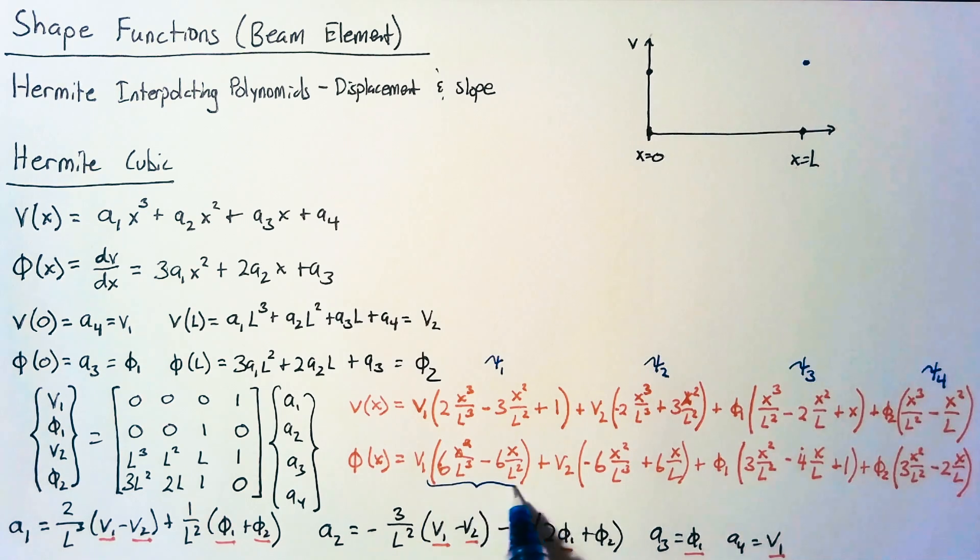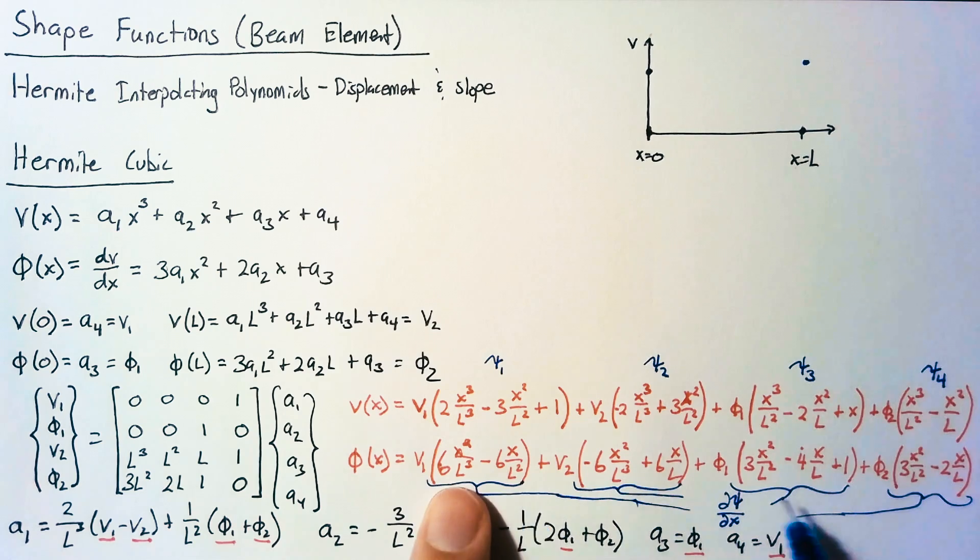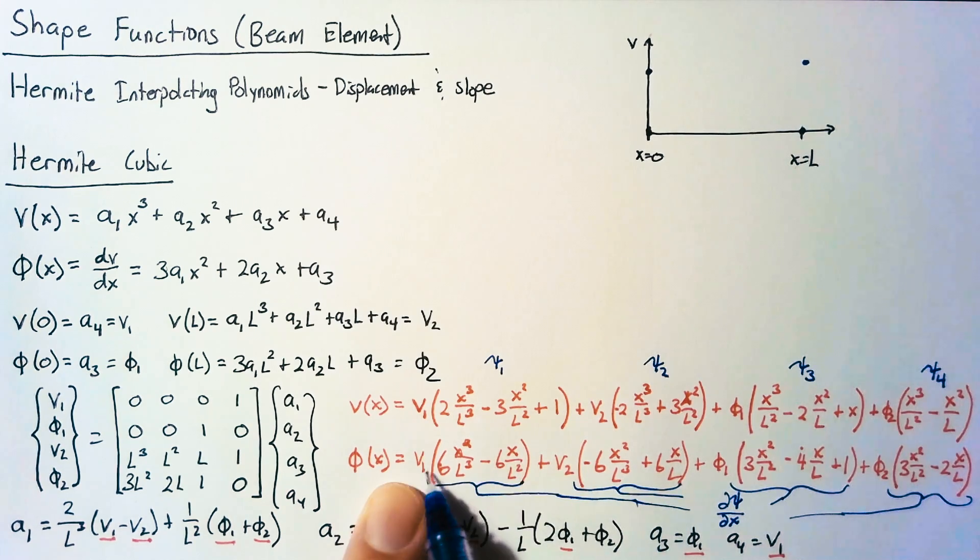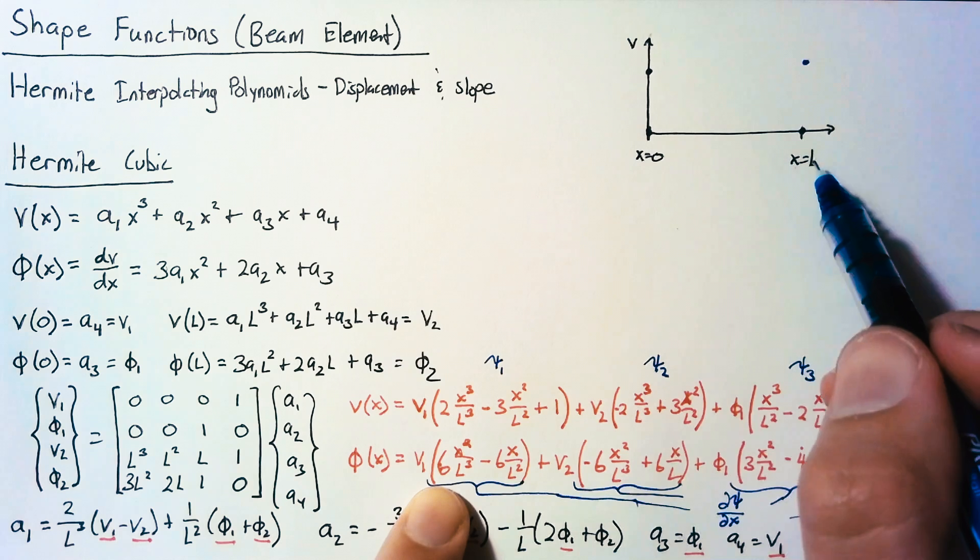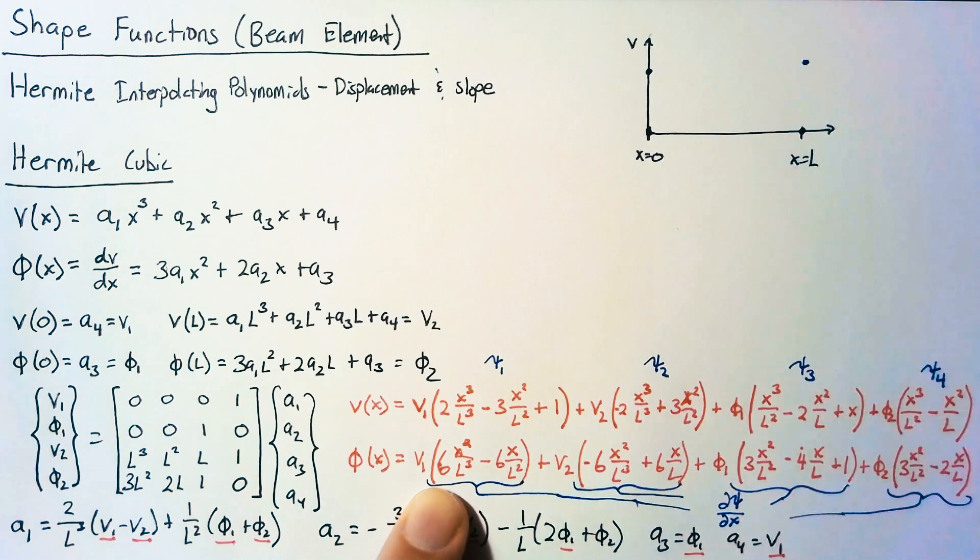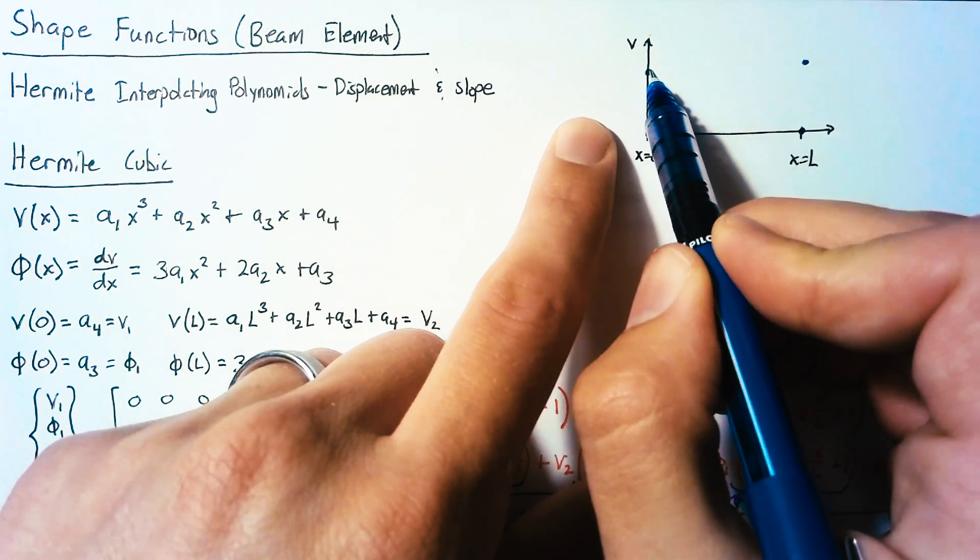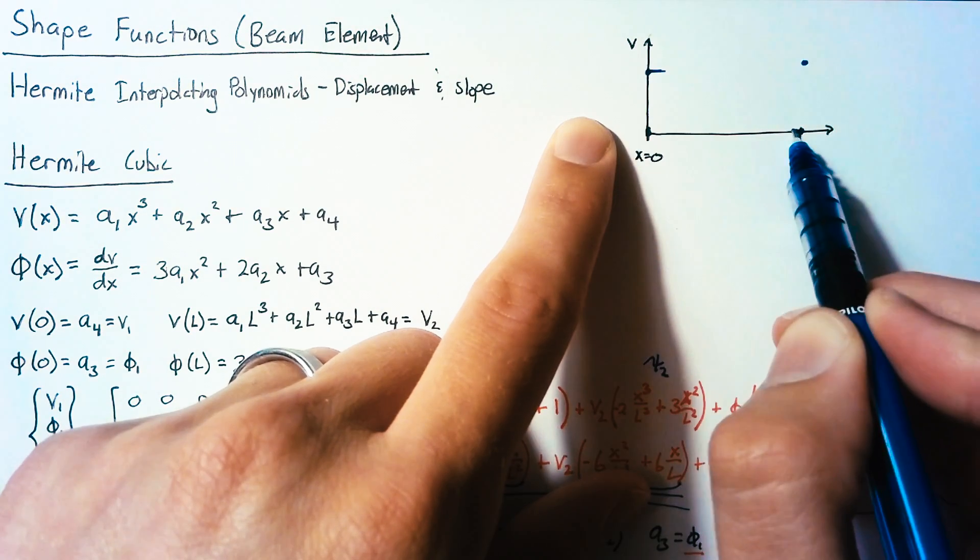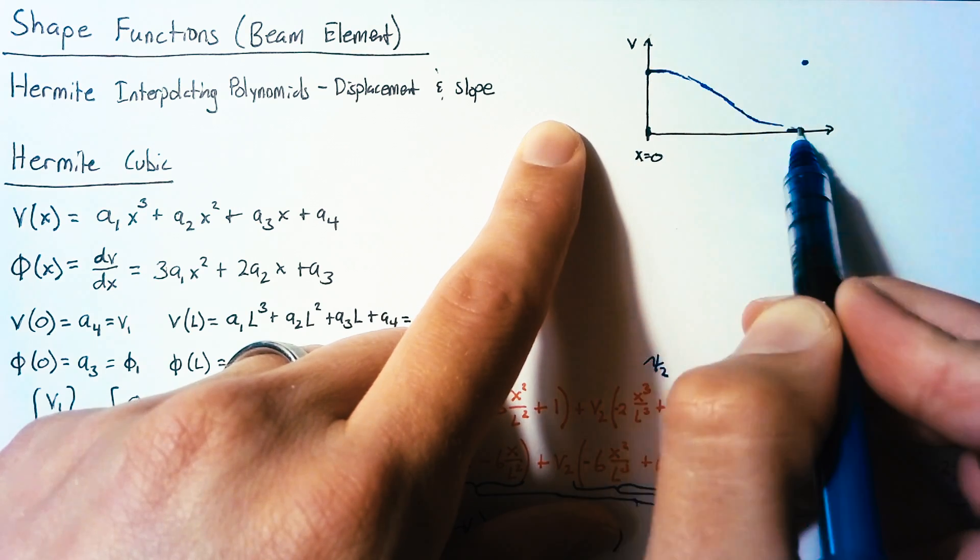And so each of these are dpsi dx values. What do these tell us? Our slope for our psi1 shape function is going to be 0 at x equals 0 and 0 at x equals l. So this helps us actually draw that first shape function. Because we know that our slope here needs to be 0 and our slope here needs to be 0. So connecting those dots, we end up with something that looks like so.